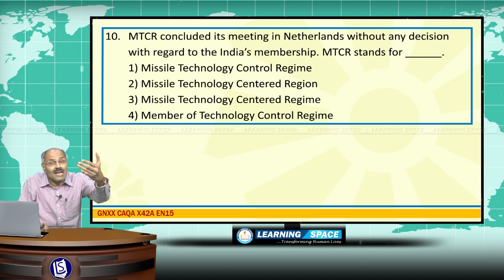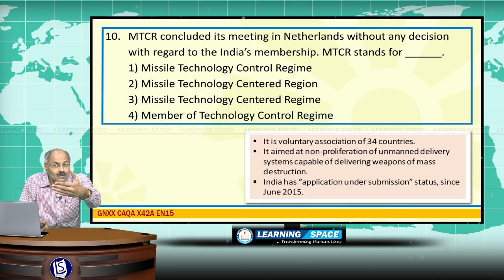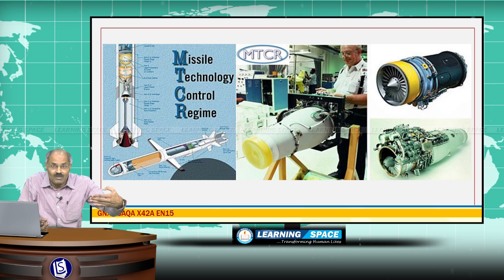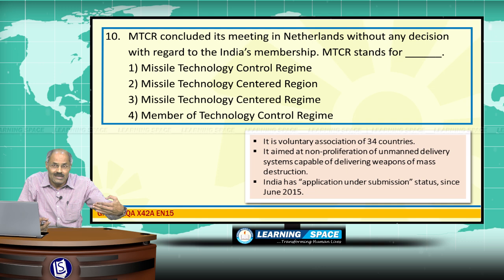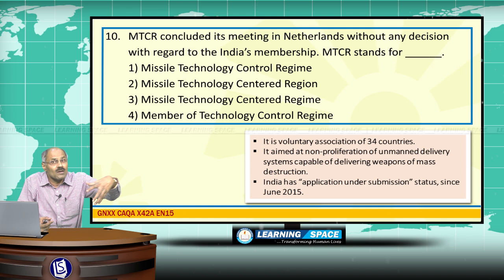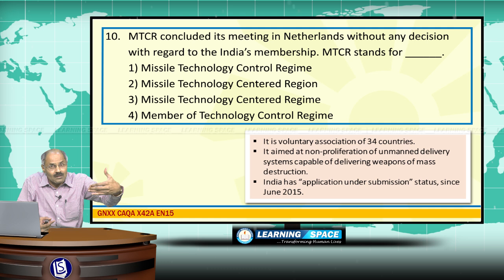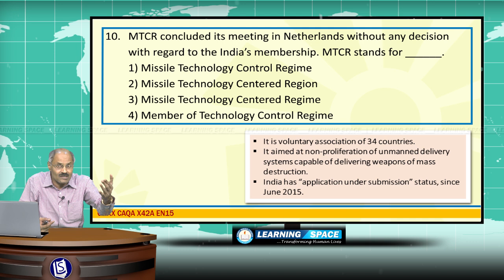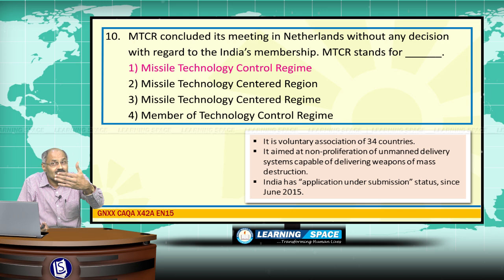MTCR — the Missile Technology Control Regime — recently concluded its meeting in Netherlands without any decision regarding India's membership. No decision was taken and India is seeking membership. MTCR is a voluntary association of 34 countries aimed at non-proliferation of unmanned delivery systems capable of delivering weapons of mass destruction. India is yet to get membership.